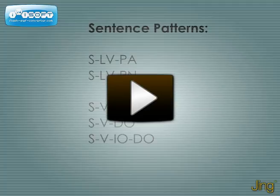Let's just remember with our sentence patterns — we have five basic patterns. The first ones are the team linking verb with our predicate adjectives and our predicate nouns. Remember that if you have a linking verb, you have to have a predicate adjective or a predicate noun with it.